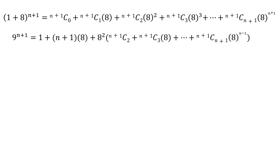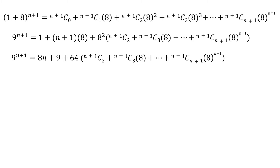This gives us 9 raised to the power n plus 1 equals 1 plus (n+1) times 8, plus 8 squared times n+1 choose 2, plus n+1 choose 3 times 8, and so on, plus n+1 choose n+1 times 8 raised to the power n minus 1. Simplifying, we get 9 raised to the power n plus 1 equals 8 times n plus 9, plus 64 times the sum of n+1 choose 2, plus n+1 choose 3 times 8, and so on, plus n+1 choose n+1 times 8 raised to the power n minus 1.